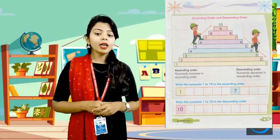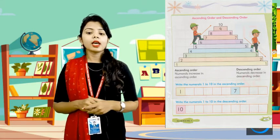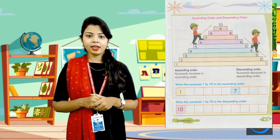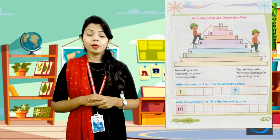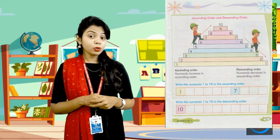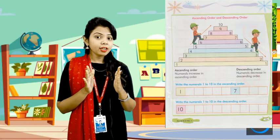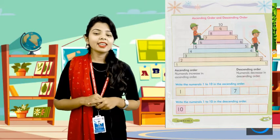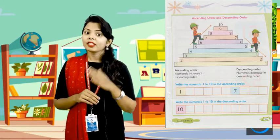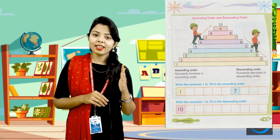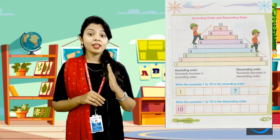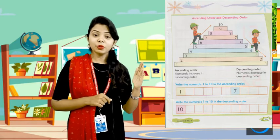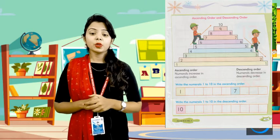Write the numerals 1 to 10 in descending order. We need to write descending order — going back. First number is 10, then 9, then 8, then 7, then 6, then 5, then 4, then 3, then 2, then 1. Very good, children.